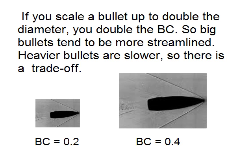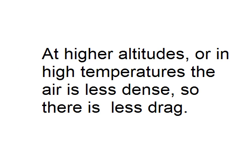Bigger bullets have bigger BC, so they have less drop, and more importantly, less wind drift. Of course, heavier bullets usually go more slowly, so there's a bit of a trade-off. But generally speaking, heavy is good for long-distance work. At high altitudes or in high temperatures, the air is thinner, so there's less drag — thin air means less to push against.